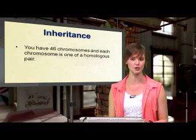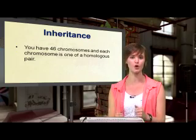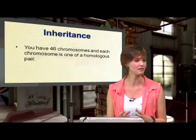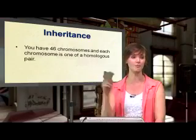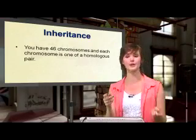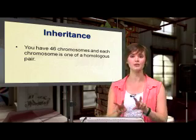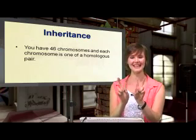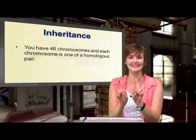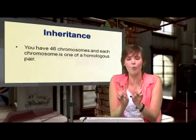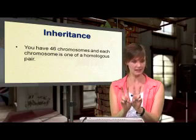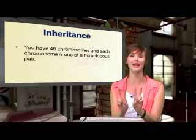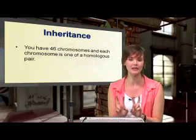Back to humans — how many chromosomes per cell in a human? 46. So we get 23 from our mum and 23 from our dad, which means that each chromosome is one of a homologous pair. It's one of a pair. We call these homologues.